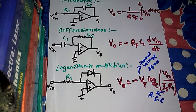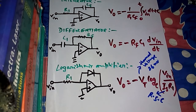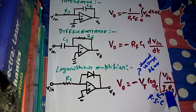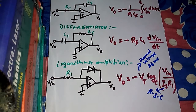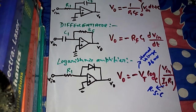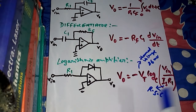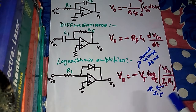The reverse saturation current depends on temperature: when temperature is higher, more heat is generated in the diode, more minority carriers are produced, and therefore the reverse saturation current is higher. This current is very small — of the order of 1 nanoampere for a silicon diode and of the order of microamperes for a germanium diode. It is extremely temperature dependent.